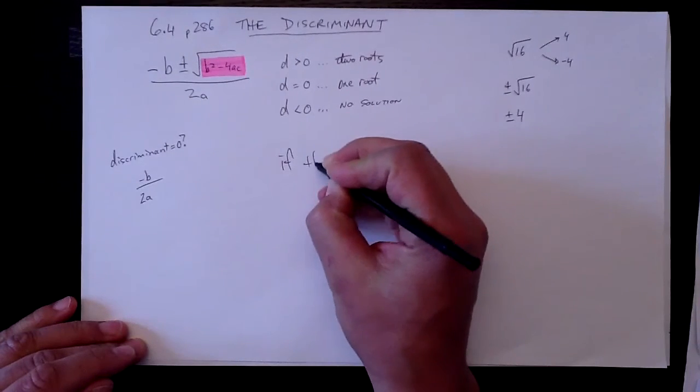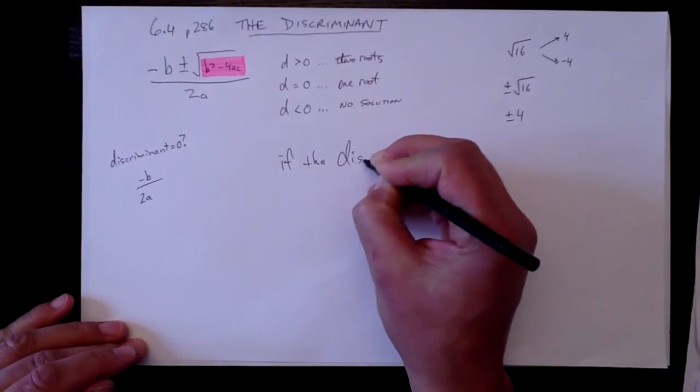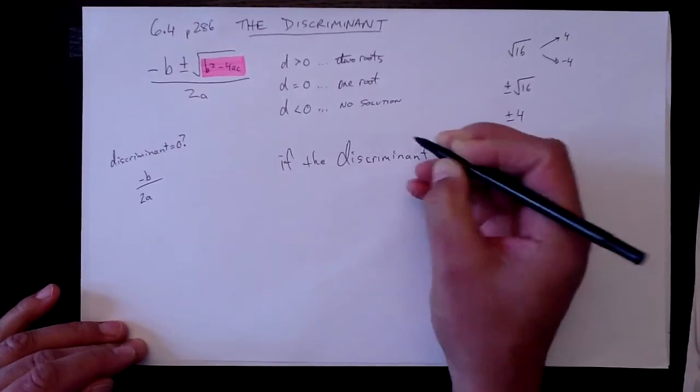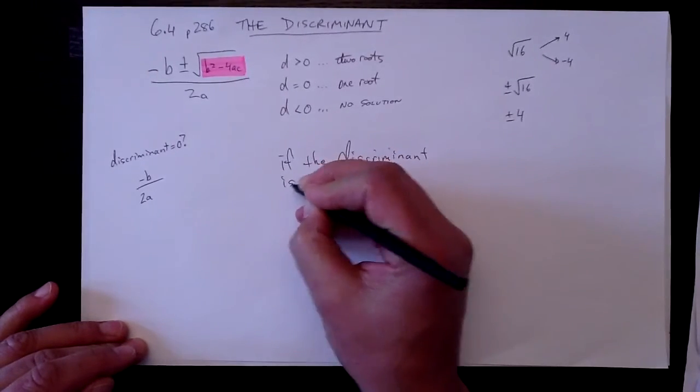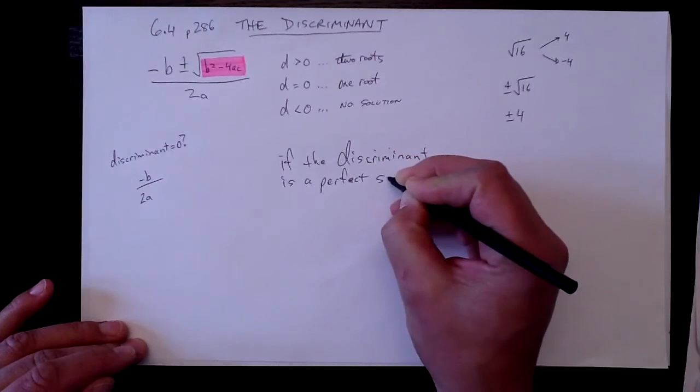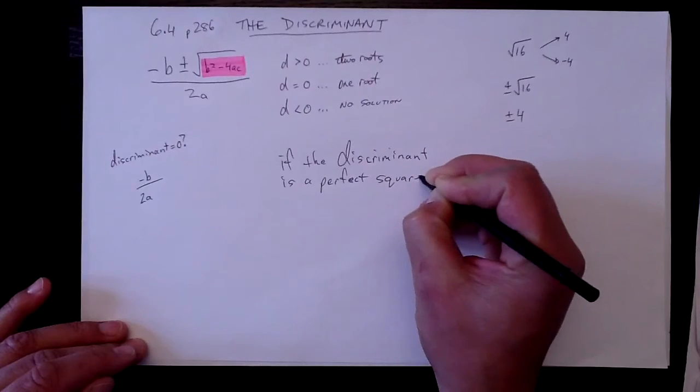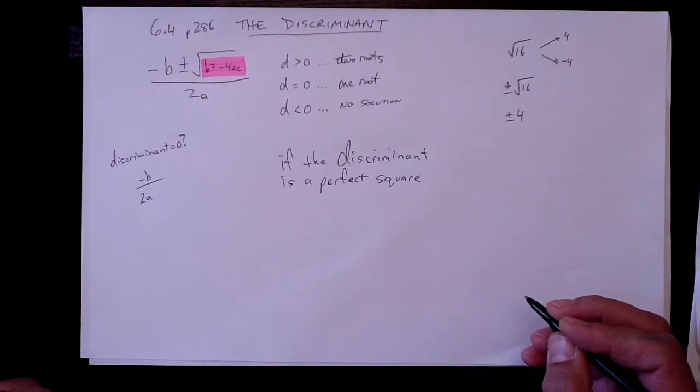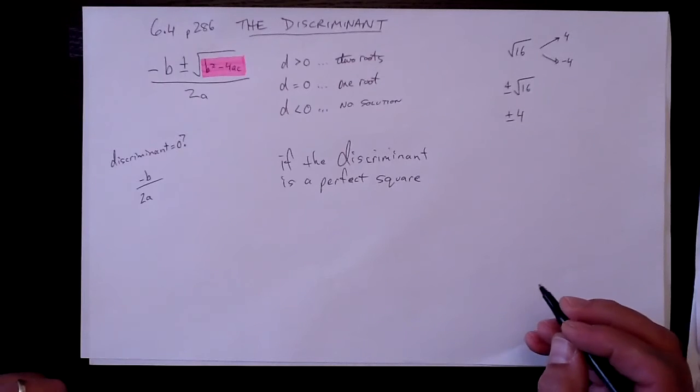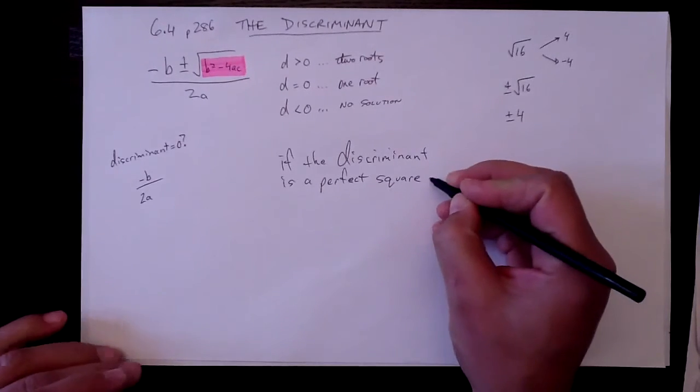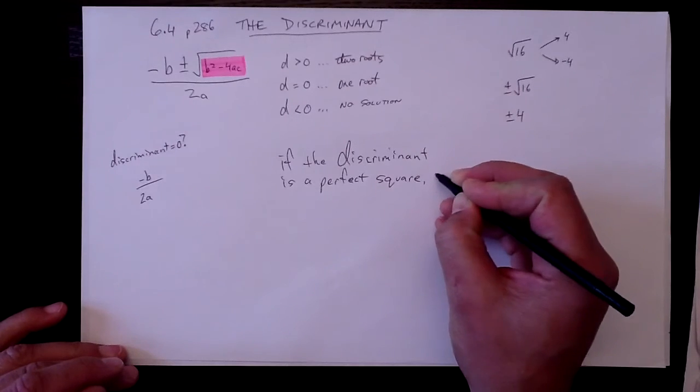If the discriminant is a perfect square, you know, like 0, 1, 4, 9, 25, 36, 64, that kind of stuff, 49. If it's a perfect square, there,